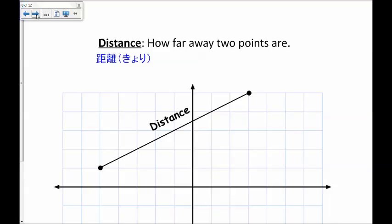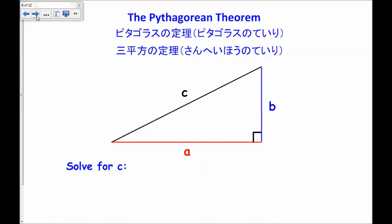Next, distance. Distance is how far away two points are. When finding distance in the coordinate plane, we will use the Pythagorean theorem.